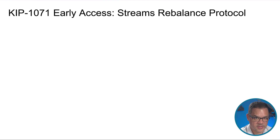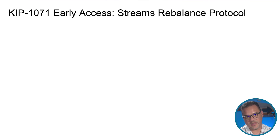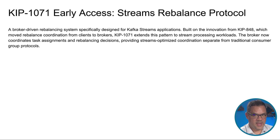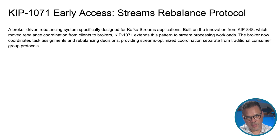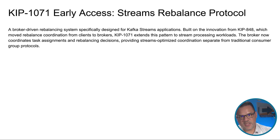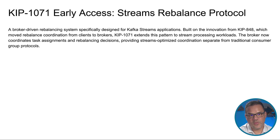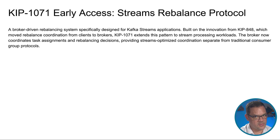For Kafka Streams developers, the early access release of KIP 1071 brings broker-driven rebalancing to your applications. The lessons of KIP 848 are being applied here to Kafka Streams applications. If you don't remember from the Kafka 4.0 release, this moves consumer group rebalance coordination from your clients to your brokers. This is part of an overall trend to make it easier for managed Kafka providers to be more useful — part of Kafka's continuing evolution towards being truly cloud-native. With KIP 1071, the broker will coordinate task assignments and rebalancing decisions in a Streams-optimized fashion, separate from the traditional consumer group protocols.